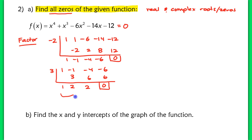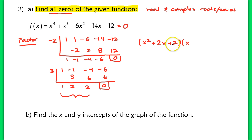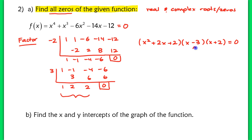Left over, we have this quadratic function x squared plus 2x plus 2. Right now, if we show the factors of this function, we have x squared plus 2x plus 2, times x minus 3, times x plus 2 — that's when the function is set equal to 0. That gives us one zero at x equals 3, another zero at x equals negative 2, and now we'll find the other zeros that come from x squared plus 2x plus 2 equals 0.